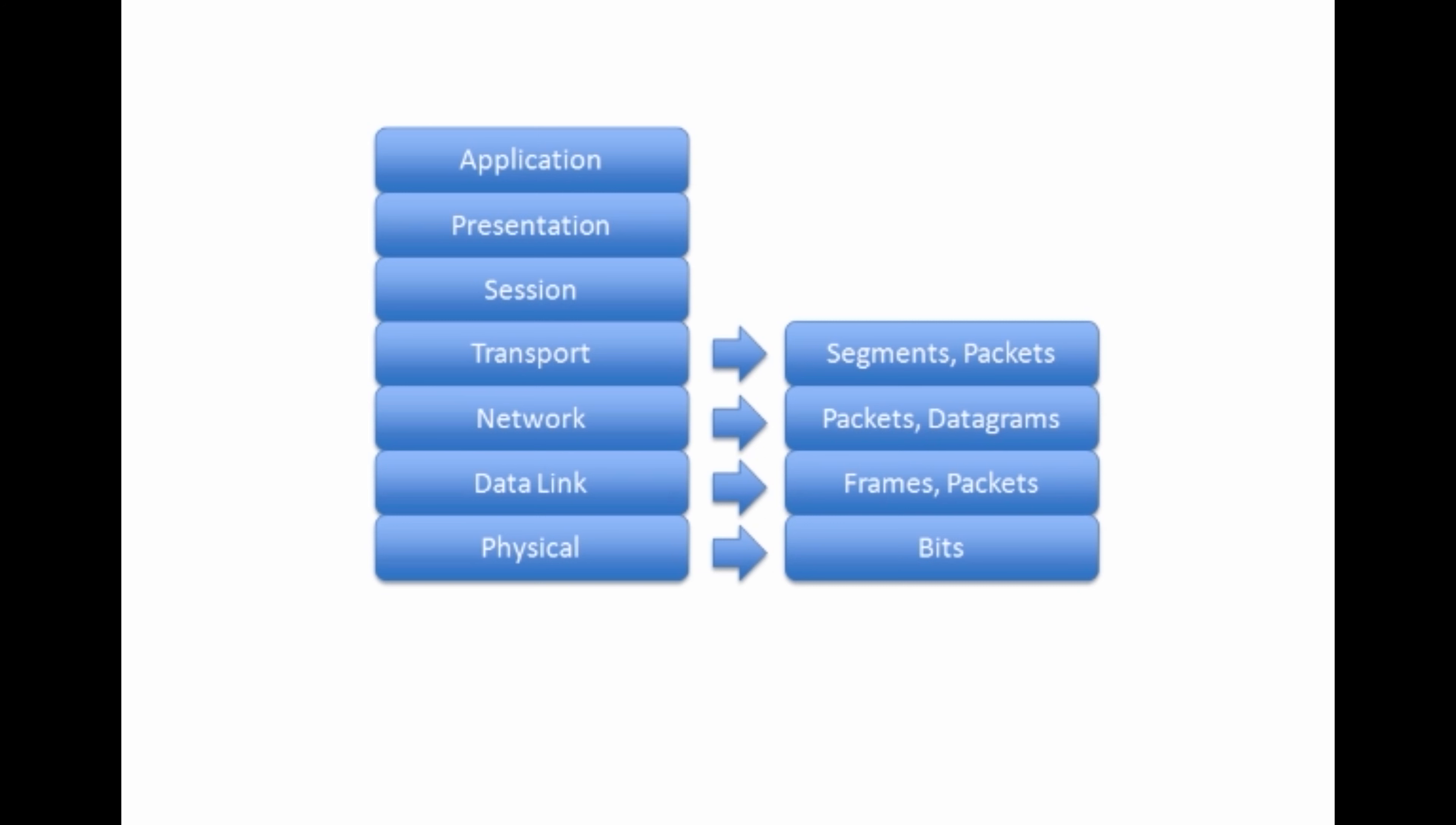When we have ones and zeros, binary ones and zeros down at layer one, those are bits. At the physical layer we have bits as our protocol data unit. At the data link layer we have frames. And you'll notice that packets show up at more than one layer. Packets technically is a layer three protocol data unit, but the term packet has come to be used as more of a generic term referring to protocol data units at layer two or three or four. So that's why we're showing you that here on screen, but technically a packet is a layer three protocol data unit.